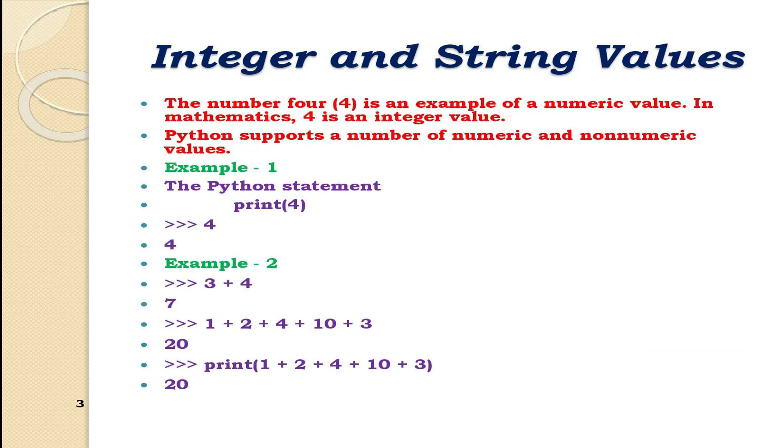Next, we will discuss integer and string values. The number 4 is an example of a numeric value. In mathematics, 4 is an integer value. Integers are whole numbers, which means they have no fractional parts and they can be positive, negative or zero. Examples of integers include 4, minus 19, 0 and minus 1005. In contrast, 4.5 is not an integer since it's not a whole number. Python supports a number of numeric and non-numeric values.